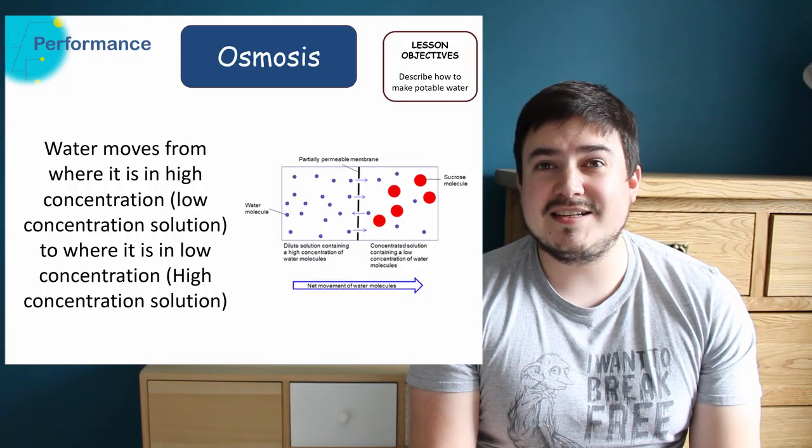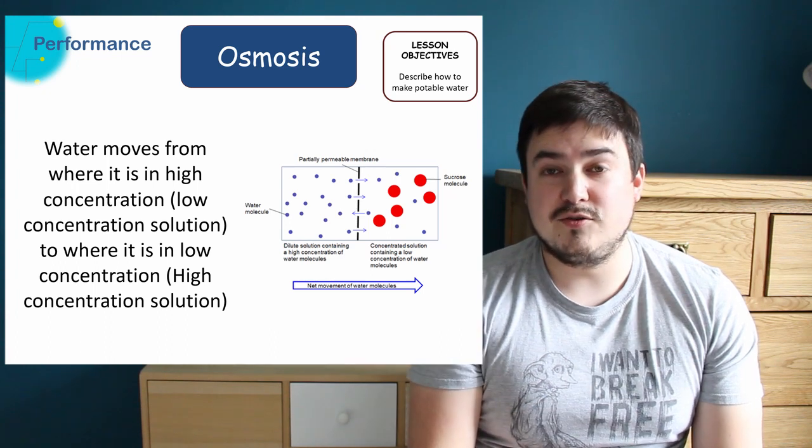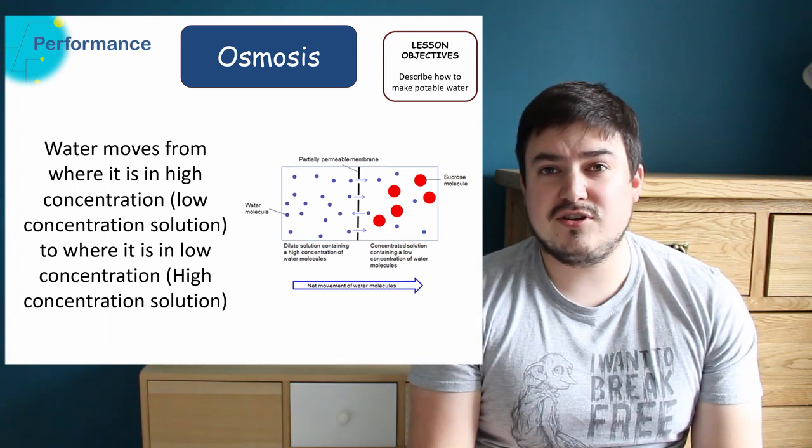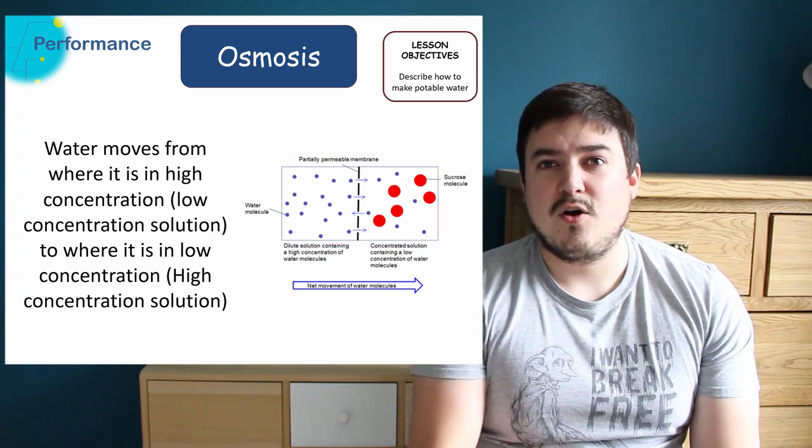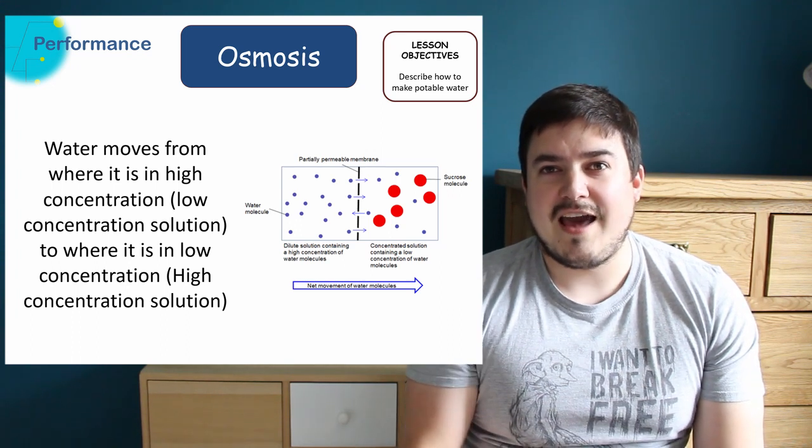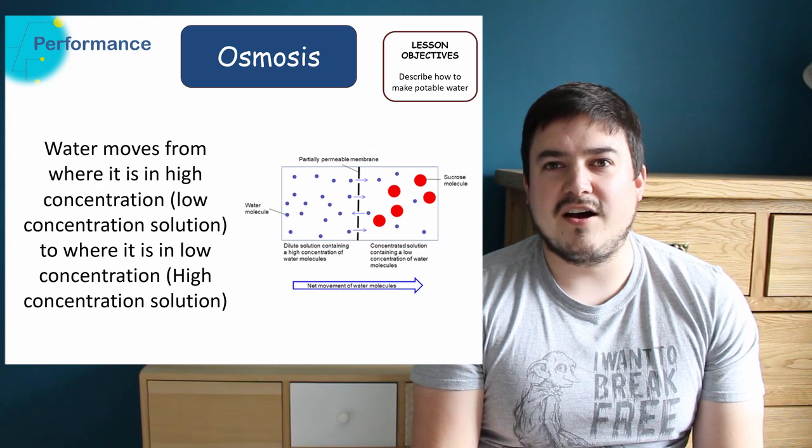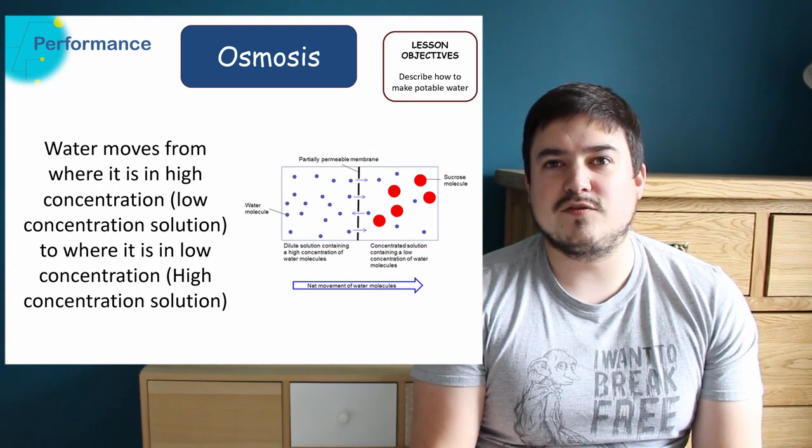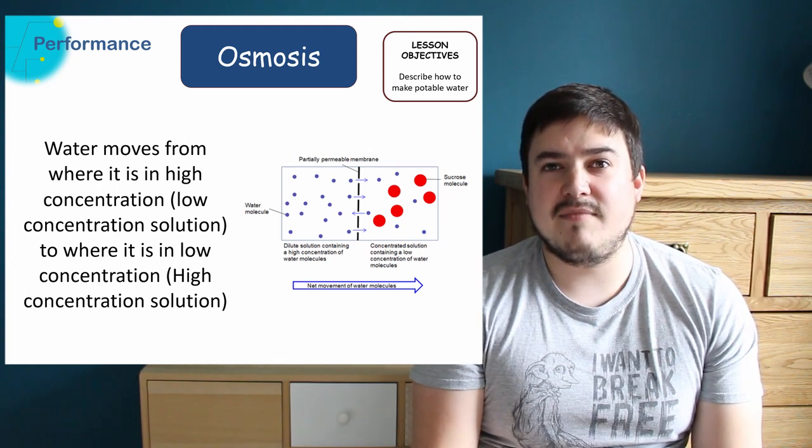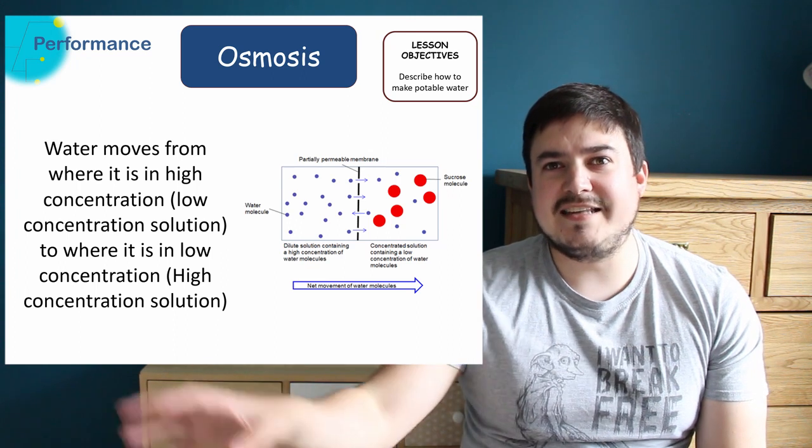You should know that osmosis is the movement of water from a low concentration solution to a high concentration solution. This is because there's lots of water when a solution has low concentration and there's not very much water when it's in high concentration. So the water goes from where it is in a large amount to where it is in a small amount and it does this through a semi-permeable membrane.